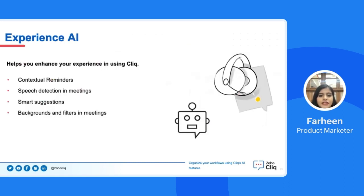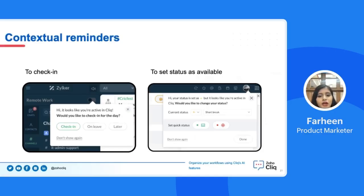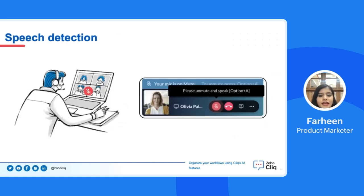You may enhance your use of Cliq by using Experience AI. If you are someone who often forgets to check in for the day while working from home or change the availability status when using Cliq after a meal break, then this feature is perfect for you. As soon as you use Cliq without checking in or updating your status, it reminds you promptly by displaying a notification. You can check in, apply leave, or update your status directly from the reminder so that your colleagues are aware of your availability. In Cliq, we use context modeling to detect a user's behavior and generate reminders that align with the scenario.